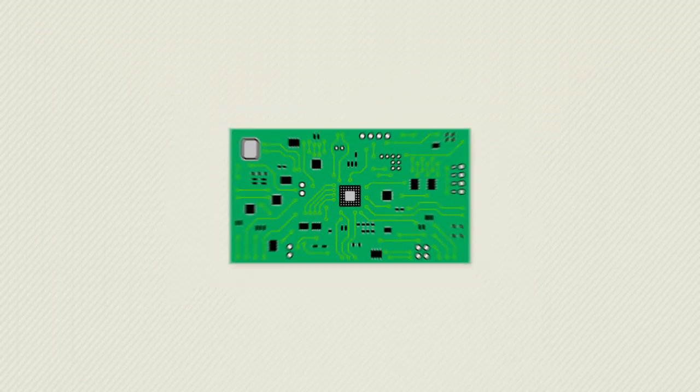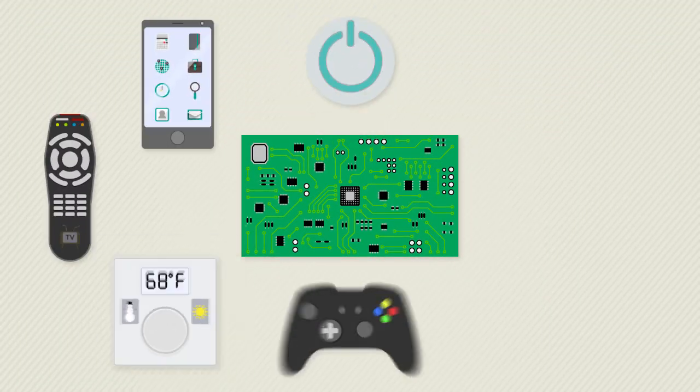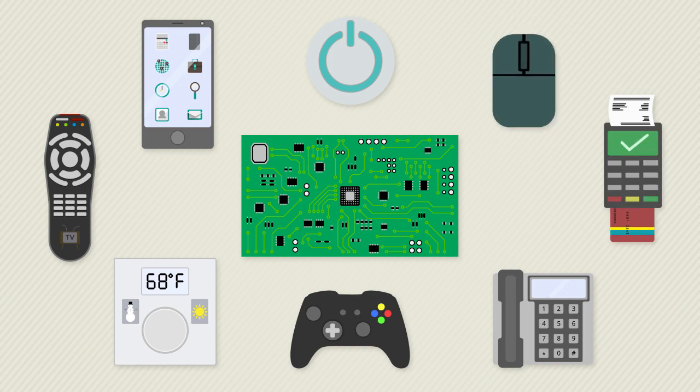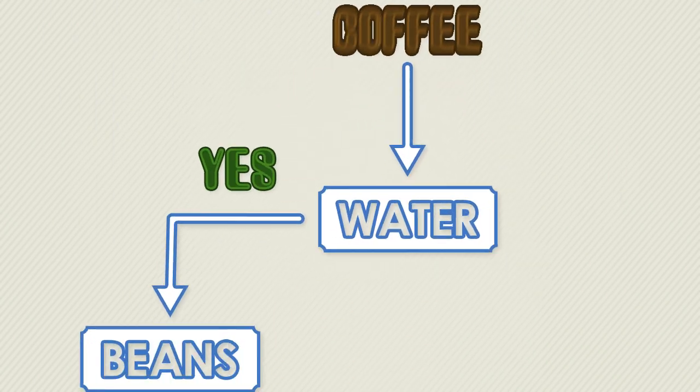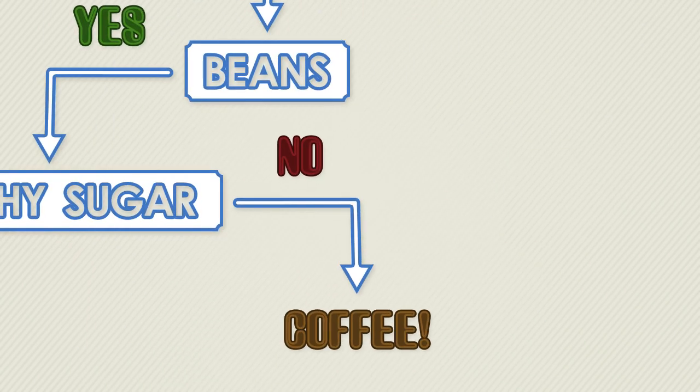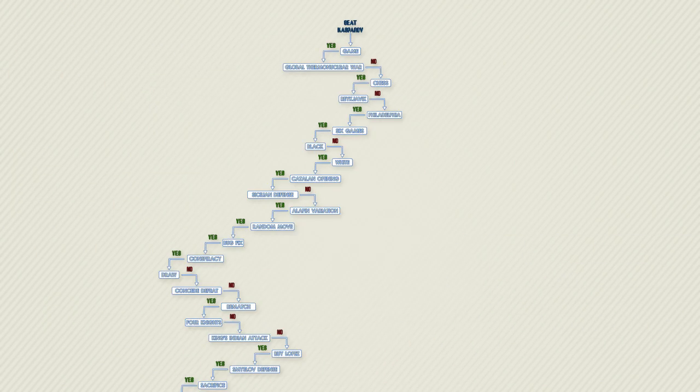A mobile messaging app might use a different language than you would use to program a credit card reader. But the function of all coding is giving the machine directions so it knows how to respond to an action, like a mouse click or a button push. Our cup of coffee is a fairly simple process, but the more complex the instructions, the more complicated the code needs to be.